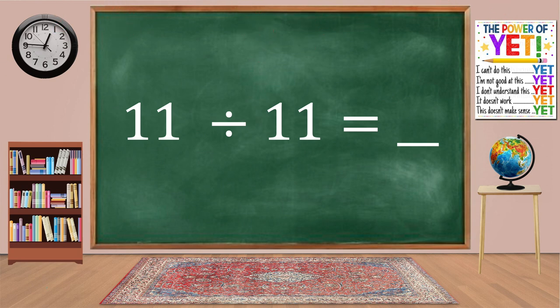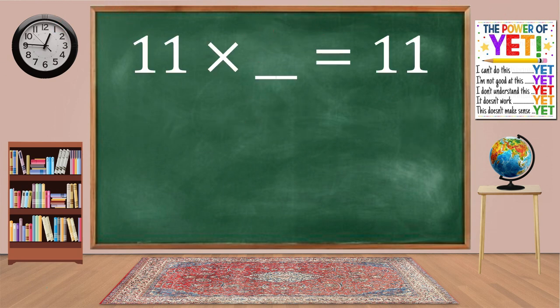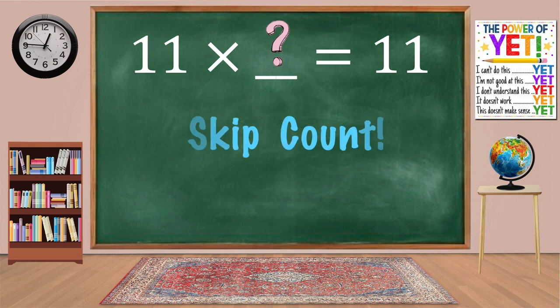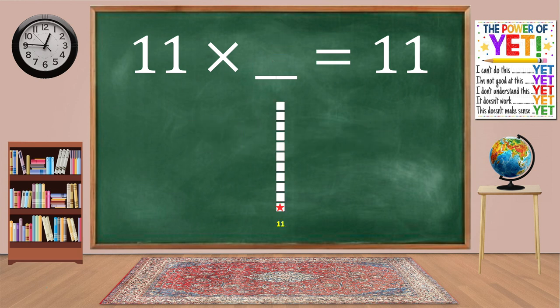11 divided by 11 equals blank. Our related fact is 11 times what equals 11. We can skip count: 11.